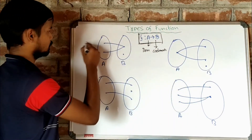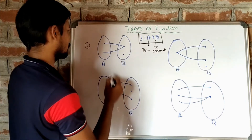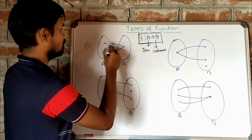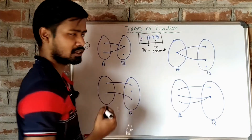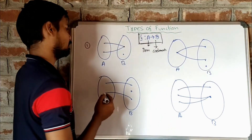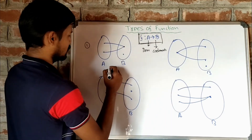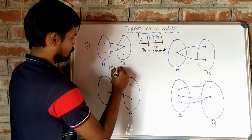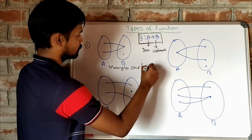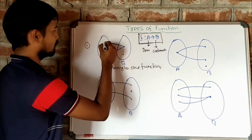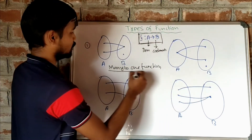Look at the first picture. There are two elements in the domain set and two elements in the codomain set. These two elements map with one element of the codomain set. This is a function. By the definition of function, two elements can map into a single element. So this is a function and this is a many-to-one type function. More than one element maps with a single element, so this is known as a many-to-one function.